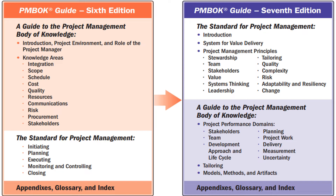Till the 6th edition, PMBOK generally talks about a guide to project management body of knowledge and the standard of project management as two sections. In the 6th edition, the guide section covers knowledge areas like integration, scope, schedule, cost, quality, resource management, communications, risk, procurement, and stakeholder management. As part of the standard for project management, they talk about project management phases like initiating, planning, executing, monitoring and controlling, and closing. The final section covers appendix, glossary, and index.